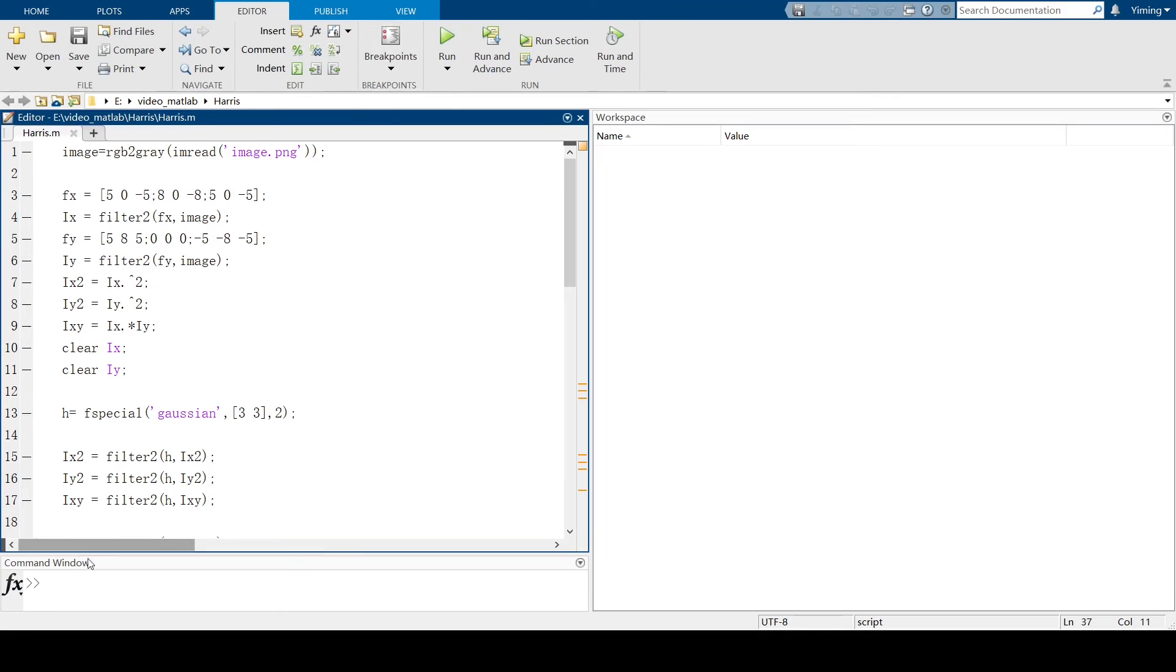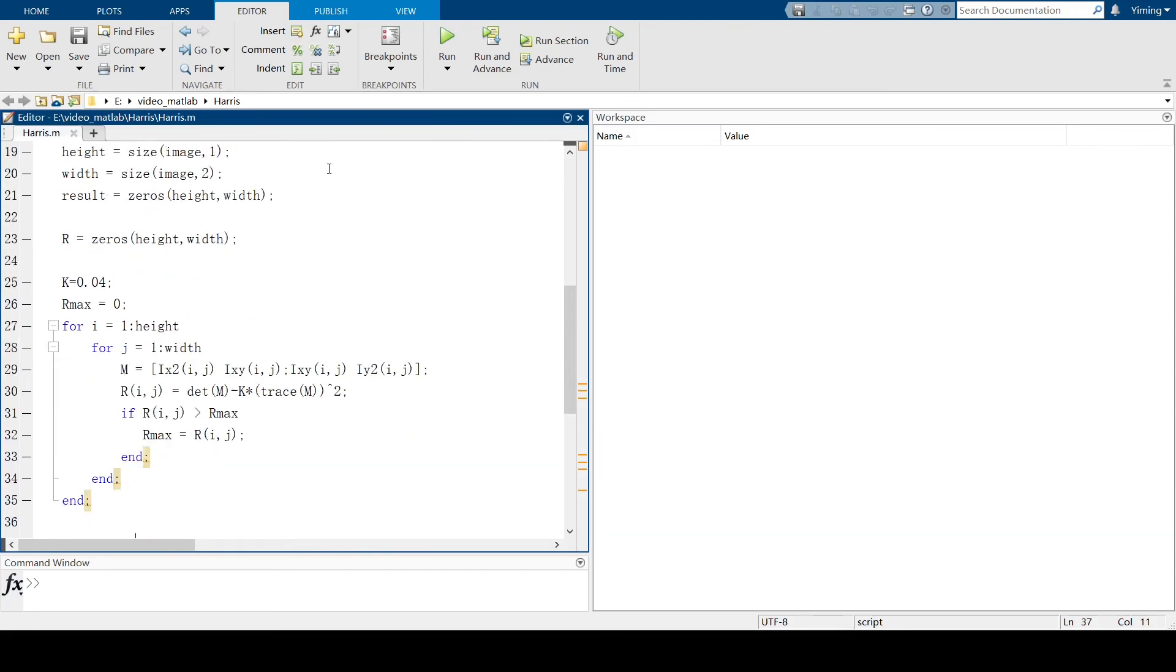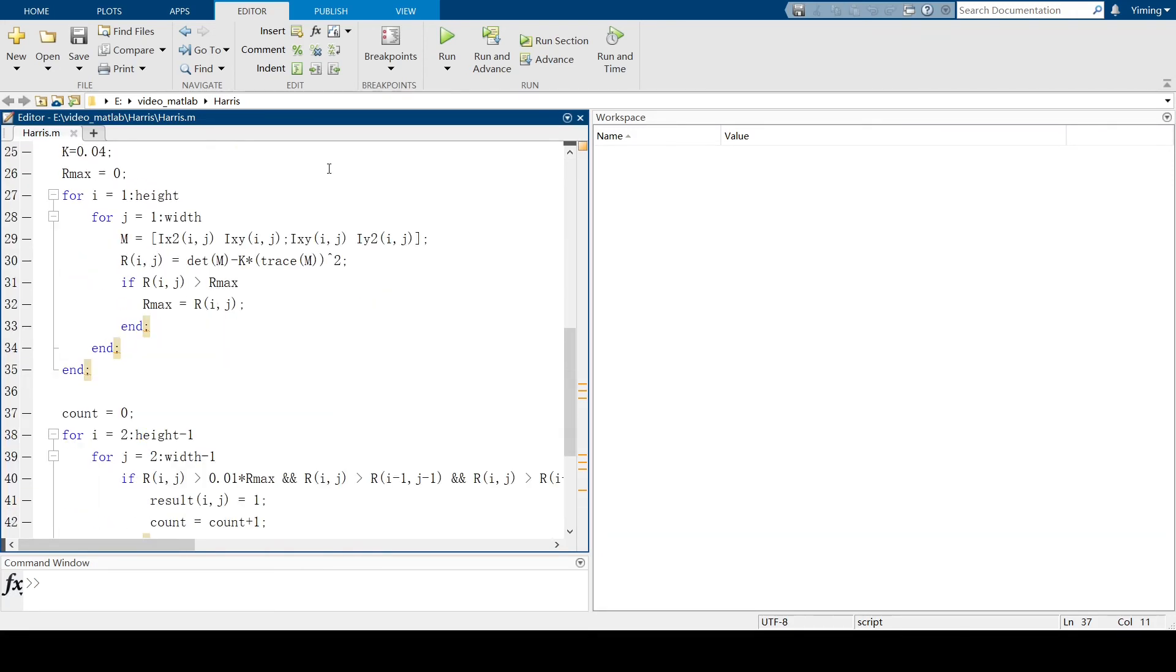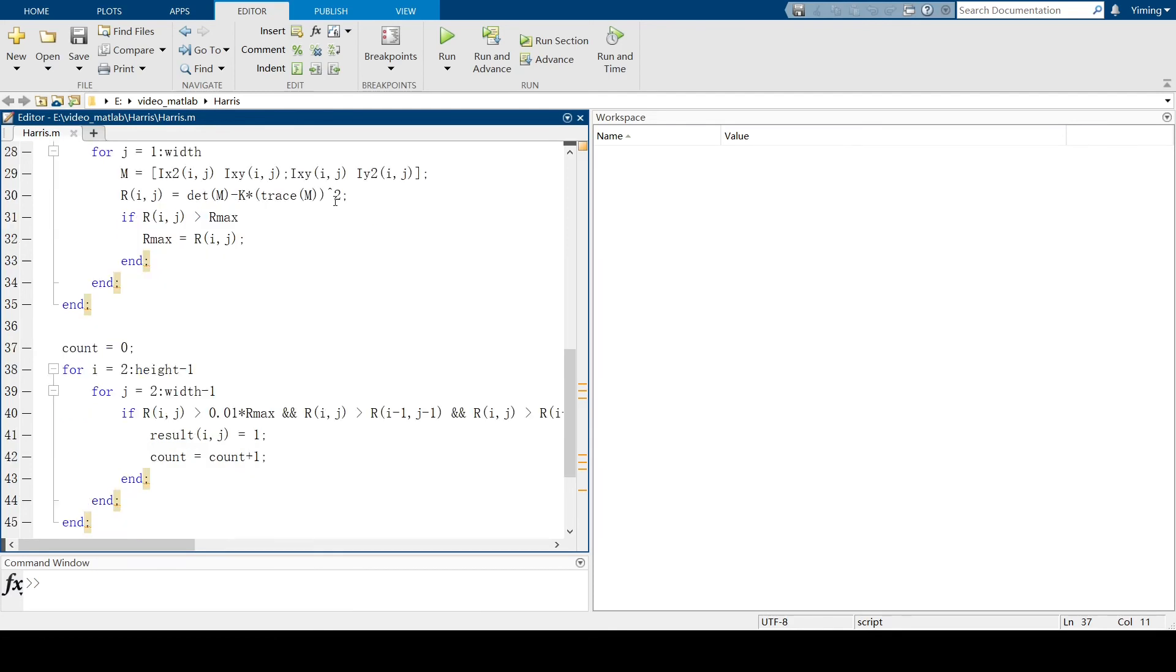So in the first part of our Harris algorithm, you can see I use some kernels and apply these kernels into an original image. The purpose of applying kernels is to reduce unnecessary features. And after applying kernels, we start calculation for the matrix that expanded from the formula of Harris Corner Detection.